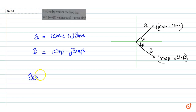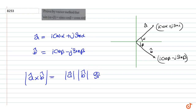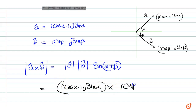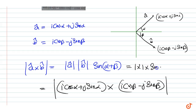The modulus of the cross product of the unit vectors is equal to the modulus of unit vector A into the modulus of unit vector B into sin of the angle between the vectors, that is alpha plus beta. This is also equal to the modulus of (i cos alpha + j sin alpha) cross (i cos beta minus j sin beta), which equals 1 into 1 into sin(alpha + beta), equal to sin(alpha + beta).